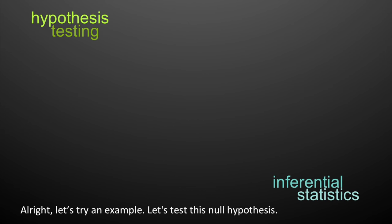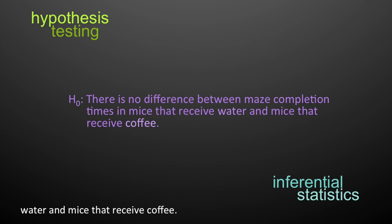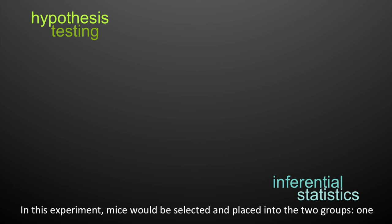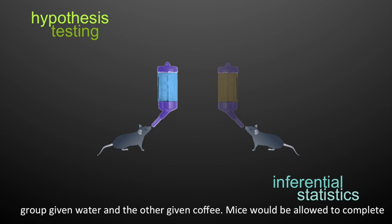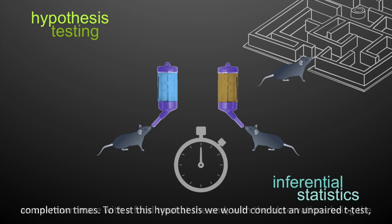Let's try an example. Let's test this null hypothesis: there is no difference between maze completion times in mice that receive water and mice that receive coffee. In this experiment, mice would be selected and placed into two groups — one given water and the other given coffee — and allowed to complete an unknown maze with a food treat at the end, with the observations being the completion times.